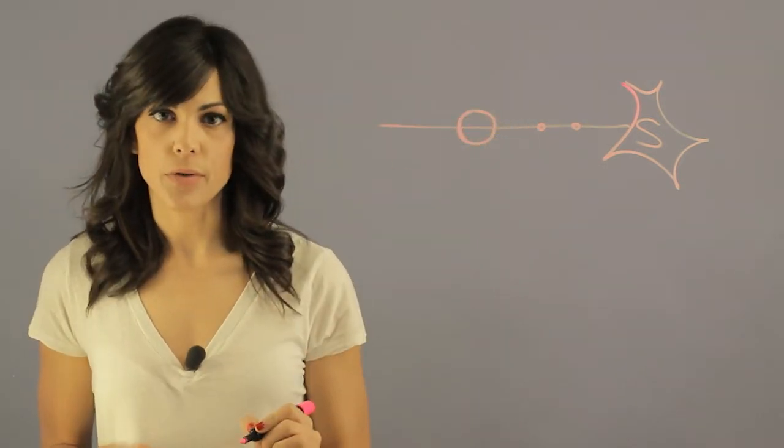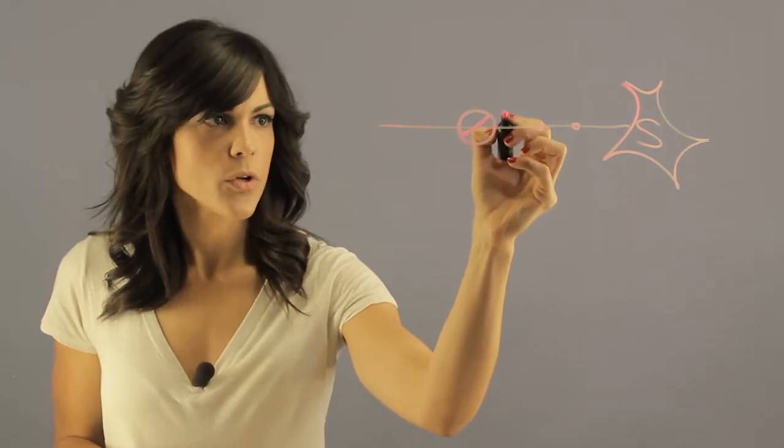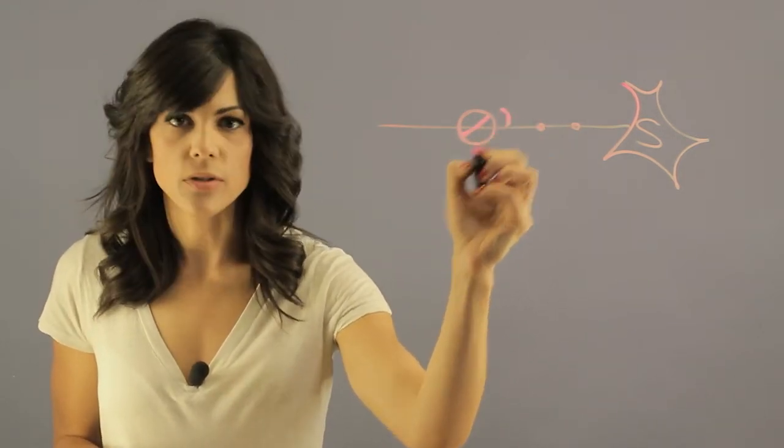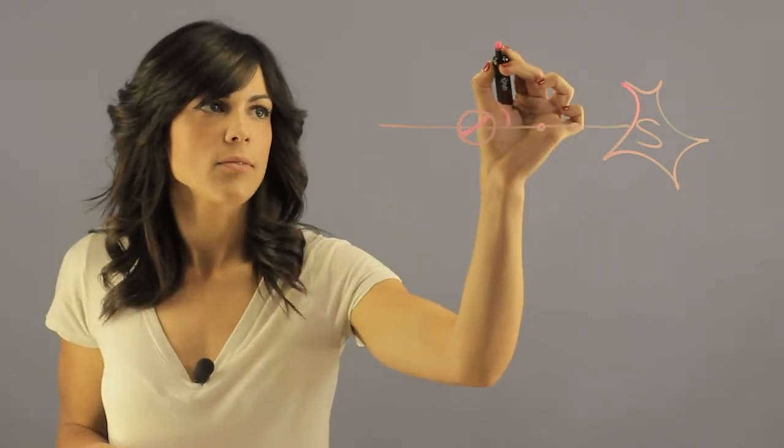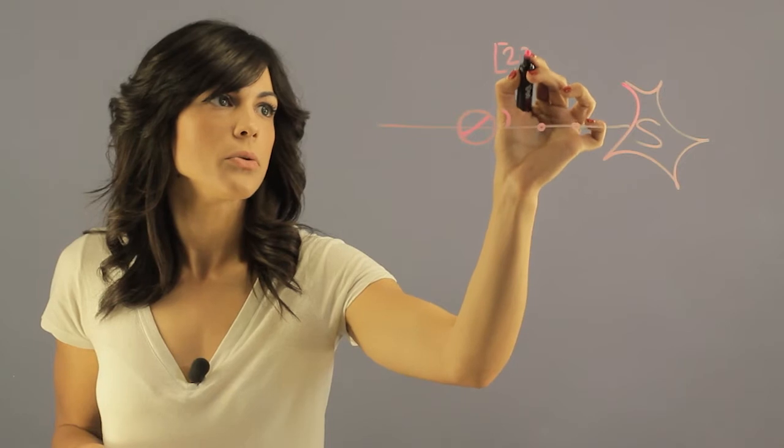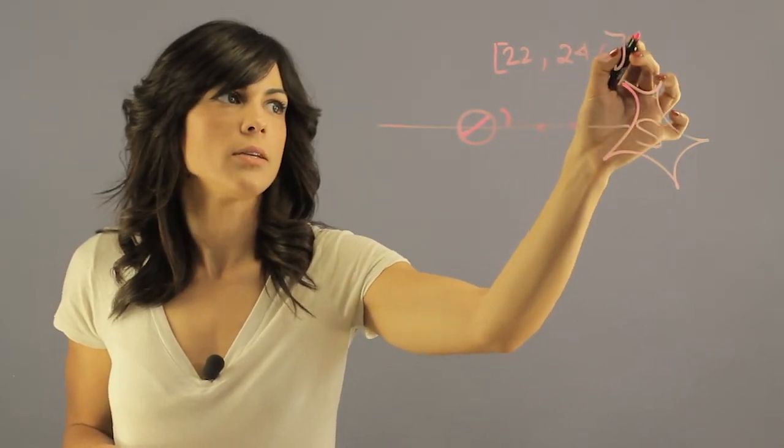If we look at the equator of Earth, it's about like this. So there's an inclination with respect to the orbital plane and this inclination can fluctuate between 22 and 24.6 degrees.